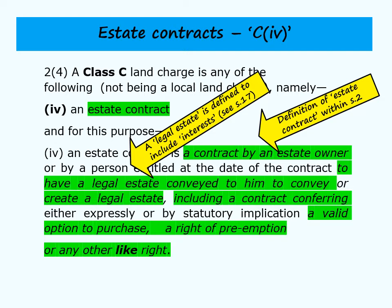The definition also includes options to purchase land — a right granted by a landowner to a third party to be able to buy the land. If the third party chooses to exercise the right, the estate owner is then required to sell. A common example is where a developer pays the estate owner to secure an option to purchase farmland, hoping to get planning permission to build a housing estate. Before investing time and money in a planning application, they want to ensure the estate owner can't sell the land to someone else in the meantime.